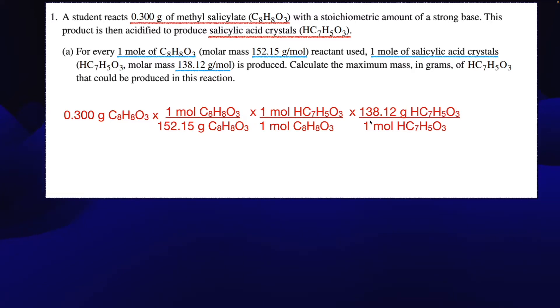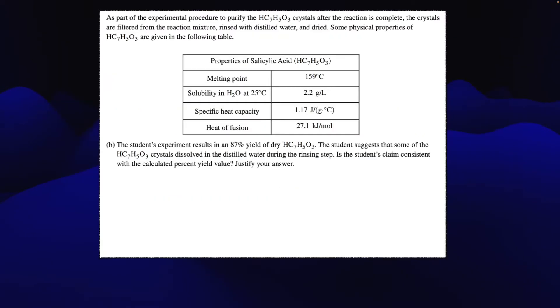So we're going to multiply by that amount. So as you can see, our grams are going to go away, our moles are going to go away, these moles are going to go away, and we're left with grams of what we want. So when you do that mathematically, what you end up with is a pretty tiny number, 0.272 grams of what we wanted, the salicylic acid crystals.